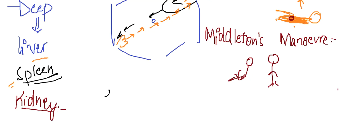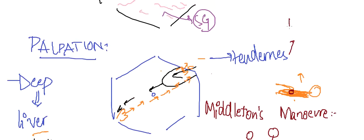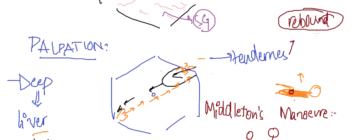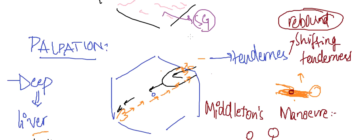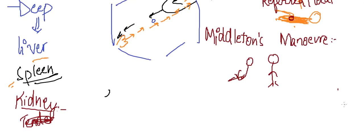Next, look at tenderness. If tenderness is present, check for rebound tenderness — apply sharp pressure over the painful area and then release it; if the patient experiences sharp pain on release, rebound tenderness is positive. There can also be shifting tenderness, mainly seen in acute non-specific mesenteric adenitis where the tenderness shifts from one side to the other. Referred or local tenderness can occur in acute appendicitis.